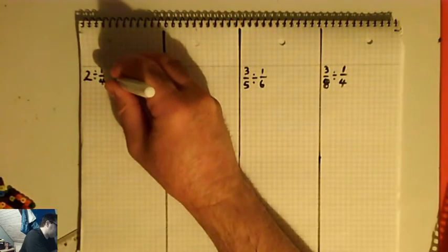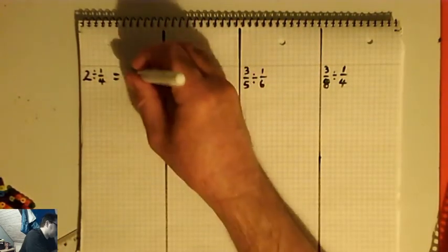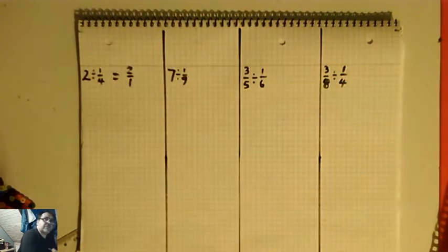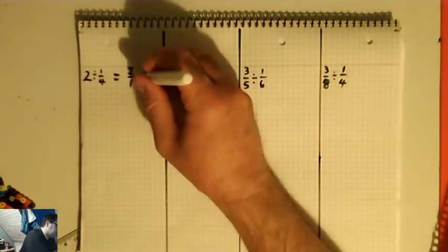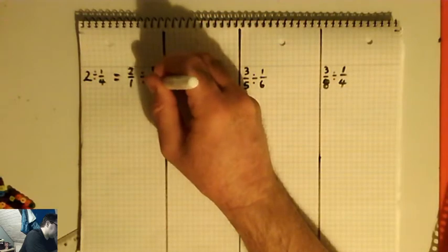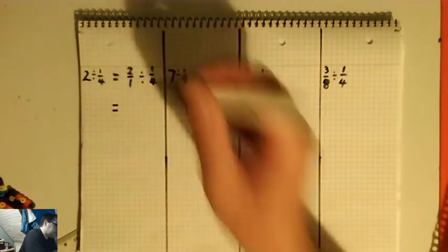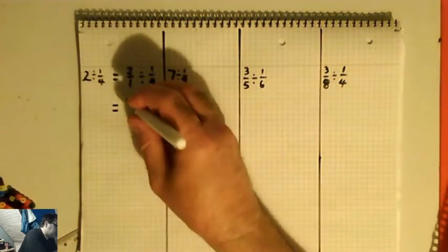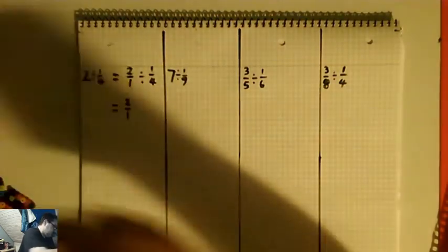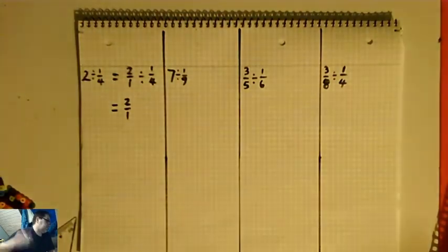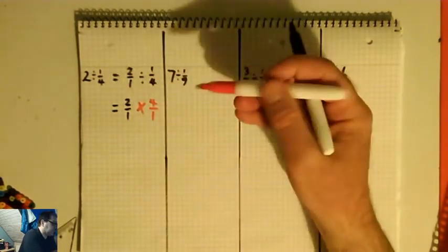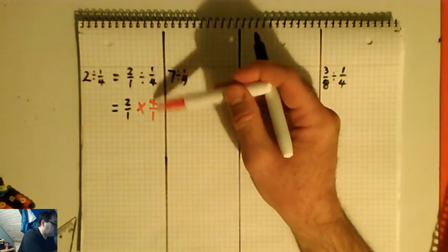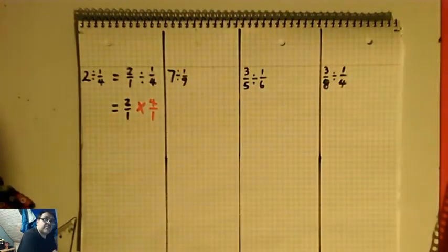A little trick is to rewrite two as two over one. So that's the same as two over one divided by a quarter. Then the trick when you're dividing by fractions is to change it to a multiplication and flip over or invert the second fraction. So I flipped a quarter over into four over one. That becomes two over one times four over one.